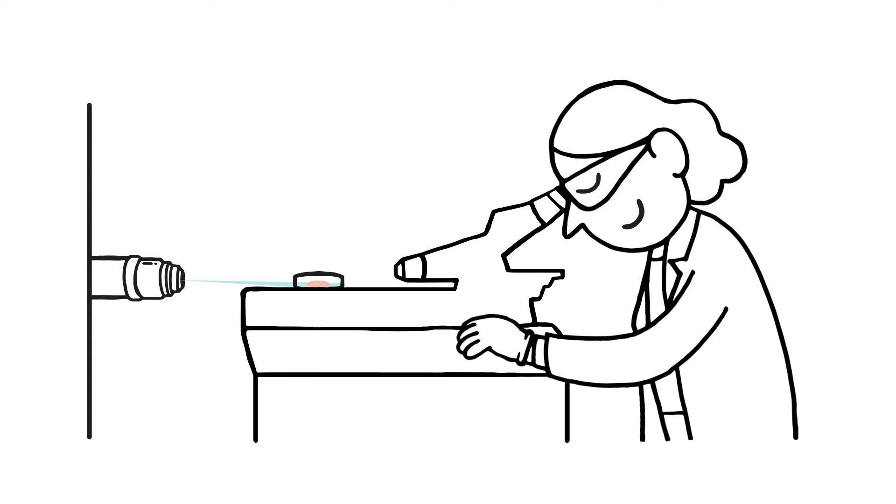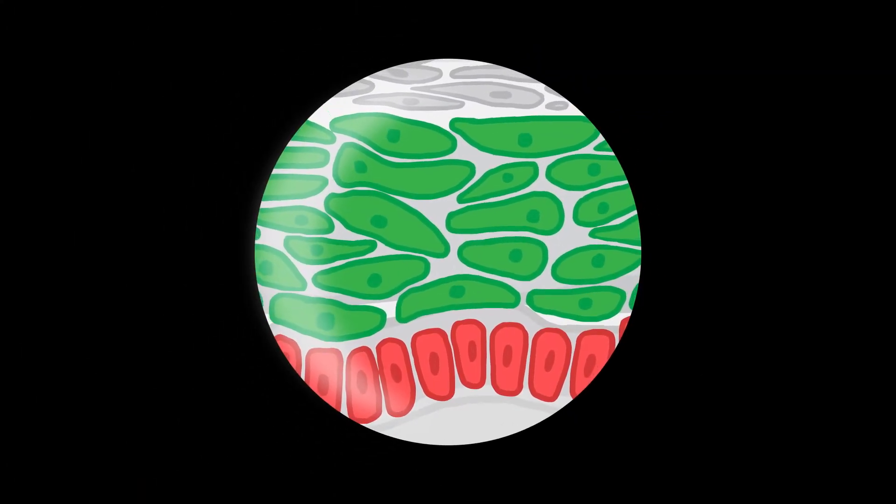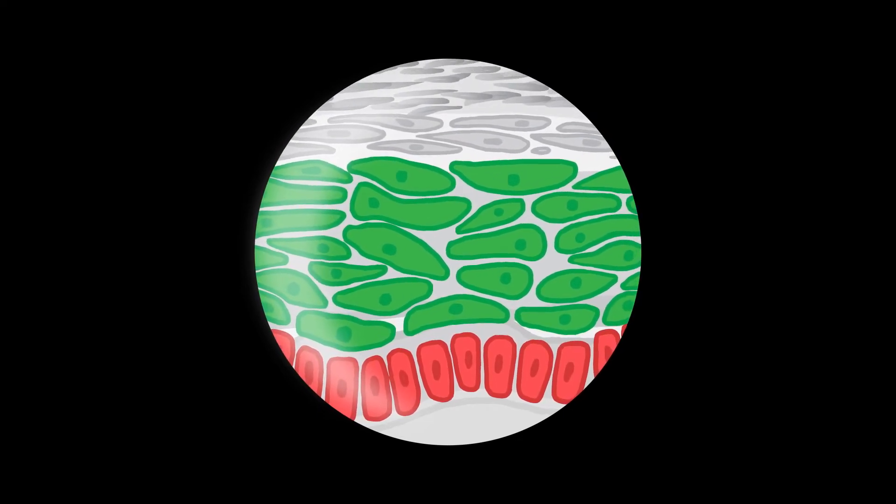What's more, as the tissue is being produced, it's possible to see how it's being built up in real time. Cells previously marked with different colours can be used as the microscope has one light channel for solidifying and others for observing.